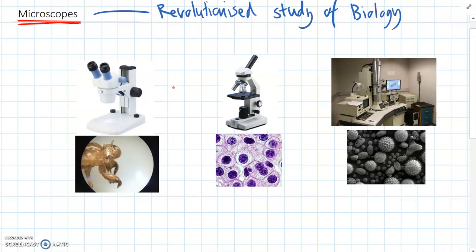So the first type of microscope is called a stereomicroscope. And we can see a picture of a stereomicroscope. These are the most simple ones.